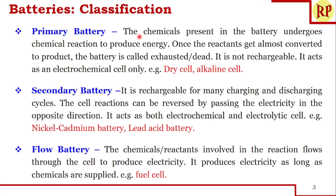In a primary battery, the chemicals present inside undergo chemical reaction to produce electricity. Once the reactants get almost over or get converted to products, the battery gets exhausted or dead. We cannot use the battery further — it cannot be recharged. So it acts only as an electrochemical cell. Examples are dry cell and alkaline cell.